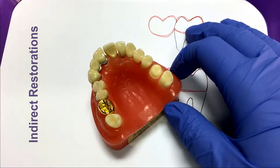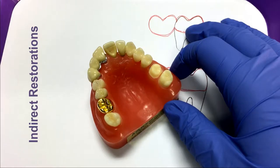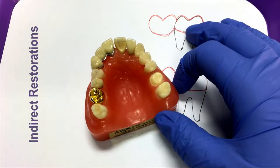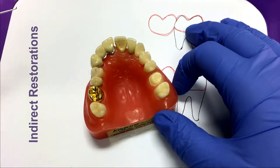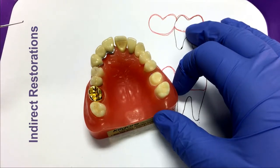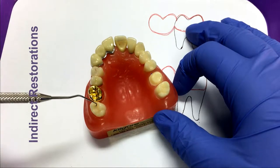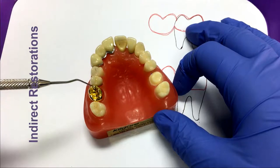This video will go through the different types of indirect restorations that can be made for patients. All restorations do the same thing. They replace missing tooth structure and they restore the function of the teeth. Depending on how much tooth structure is lost depends on what type of restoration the dentist will recommend.